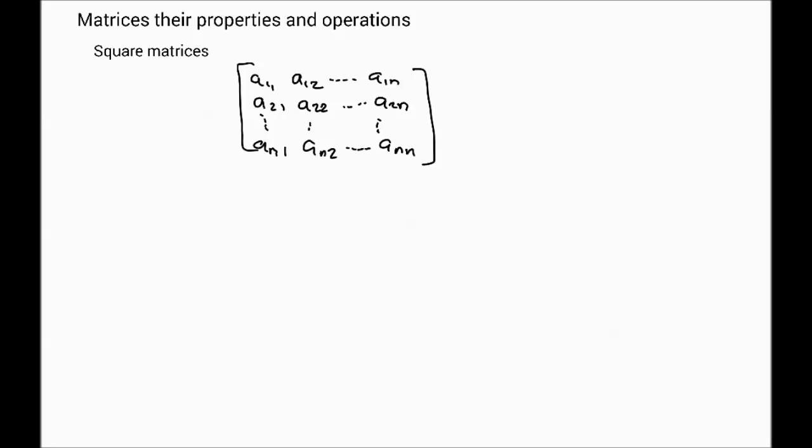One interesting property of the square matrix is, just as the geometrical square has a diagonal, in the same way, a square matrix also has a diagonal. This is called the diagonal of the matrix. The entries of the main diagonal, it's called the main diagonal of the matrix.